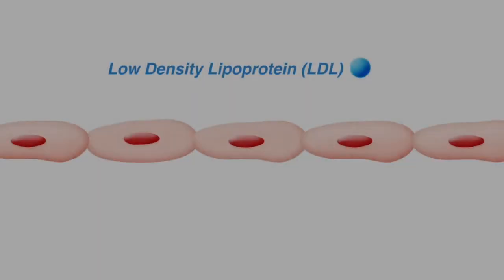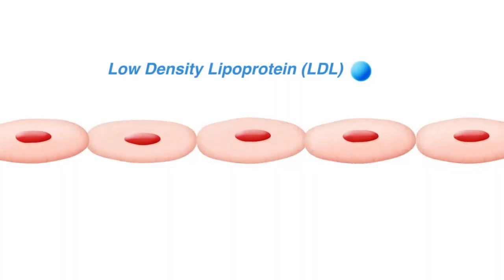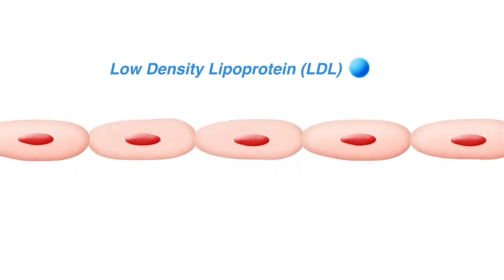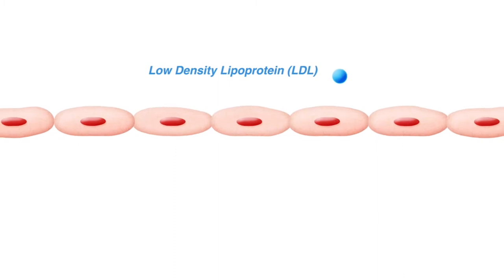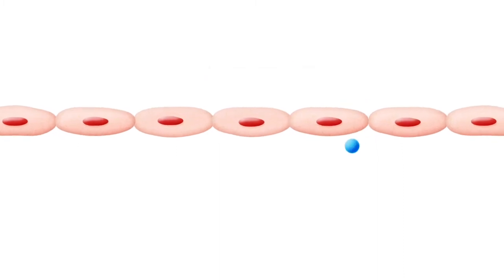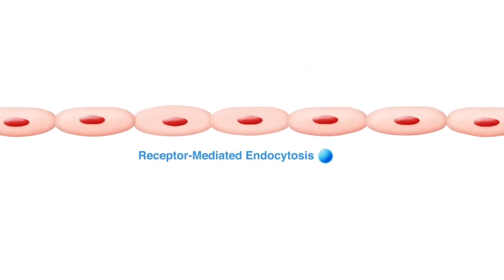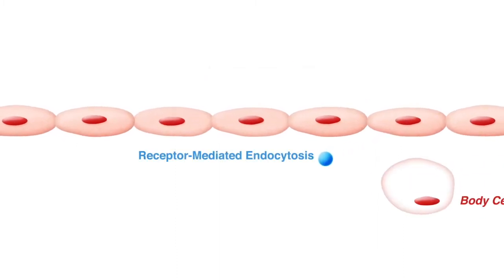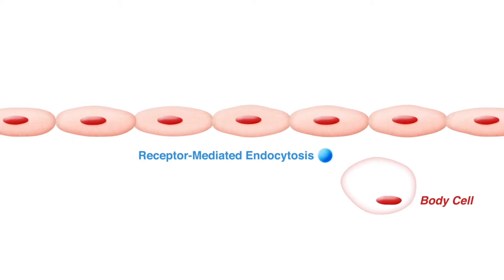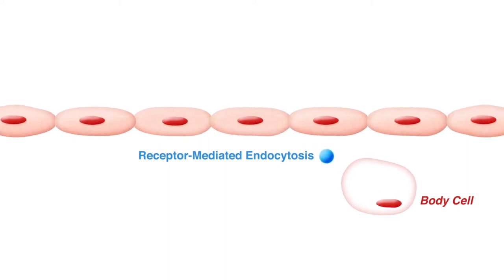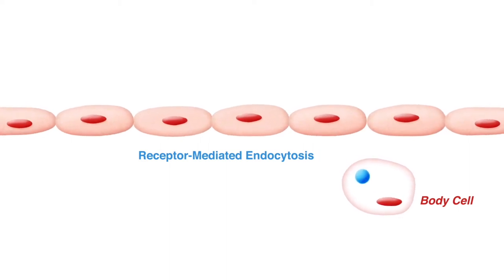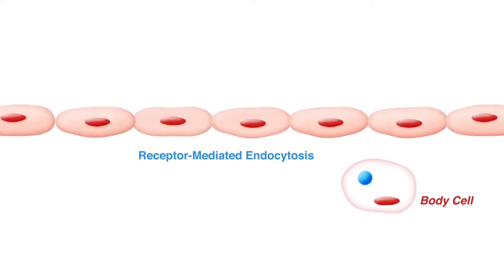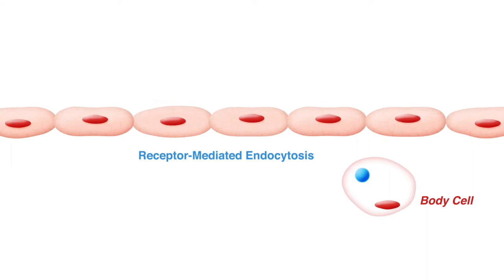Normally, most of the low-density lipoproteins or LDL pass through the endothelial cells by transcytosis from the blood and then enter the body cells by receptor-mediated endocytosis to be used in normal cell processes.